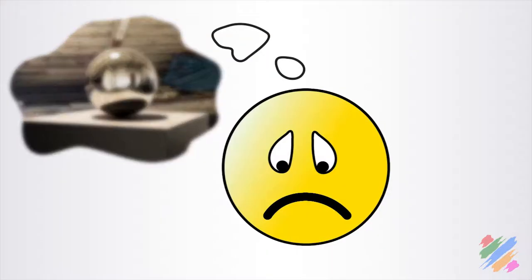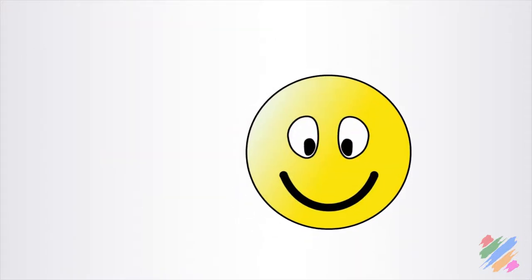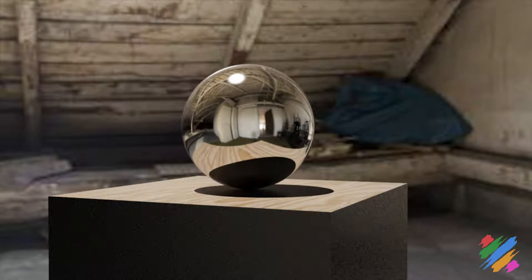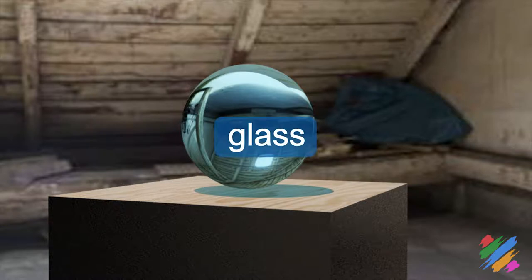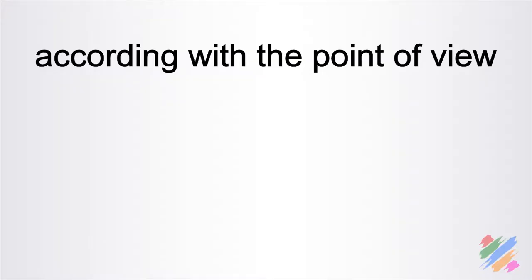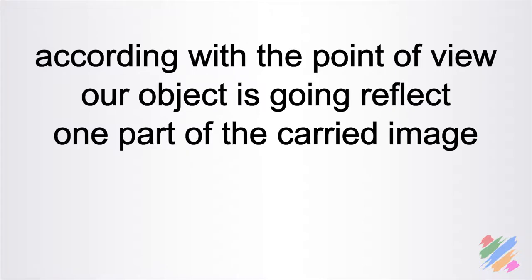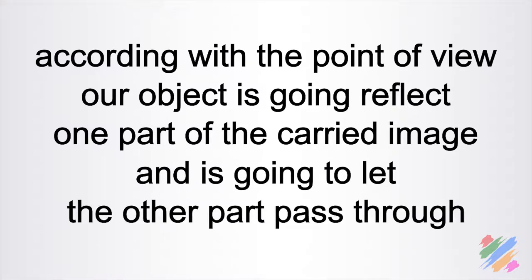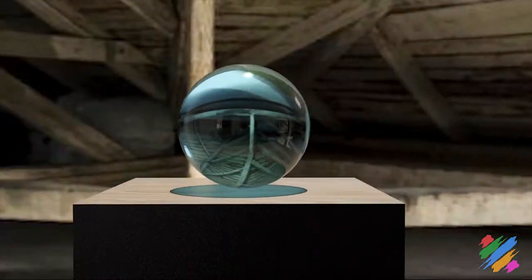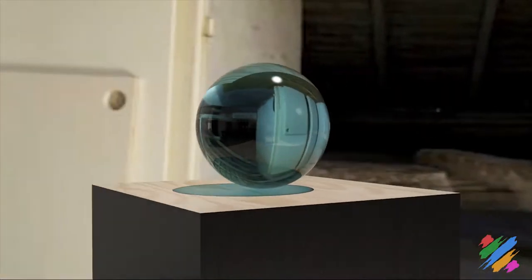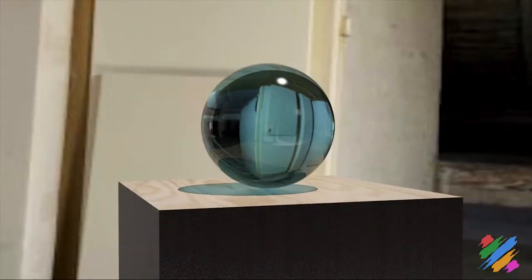This is very difficult if we want to represent a realistic scene by memory, but it becomes quite easy if we use a model. Now let's change the sphere's material one more time — we are going to use a very transparent one, for example some glass. Things are more complicated because, according to the point of view, our object is going to reflect one part of the carried image and let the other part pass through. The image we see inside the sphere is mostly coming from behind, but from the right point of view we can see both the refracted and the reflected image. They are both distorted by the sphere's shape, and if we change its external surface, they are also both blurred.